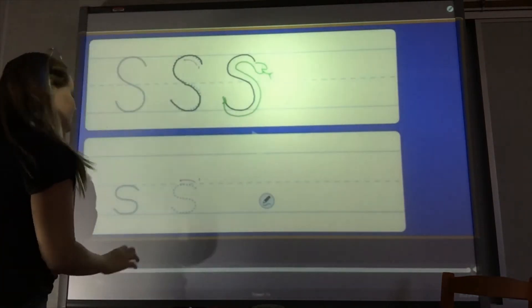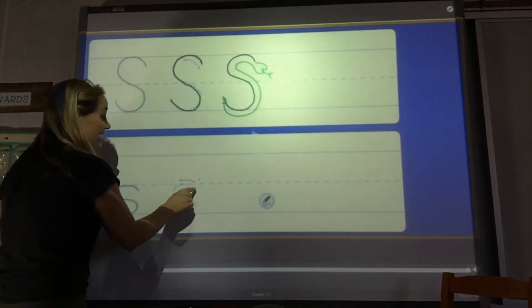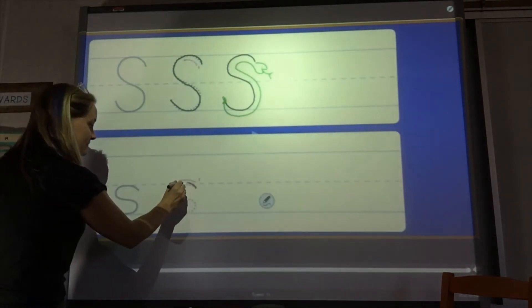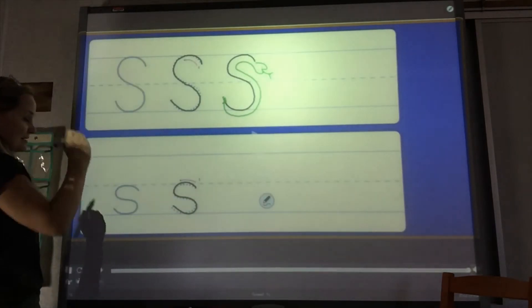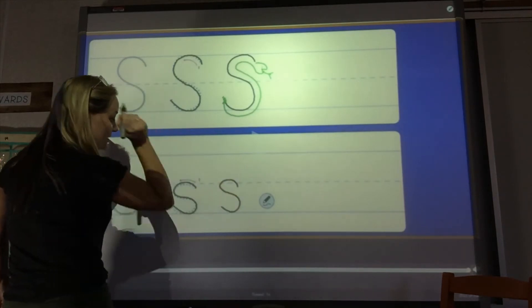It's pretty much the same, except lowercase letters are shorter usually. And this lowercase S starts at the dotted line. Use your finger. Ready? And sweep back. Start here, curve, and then curve the other way.